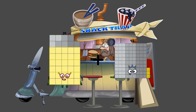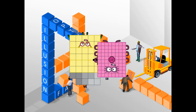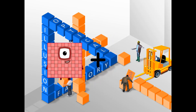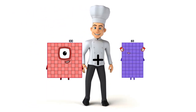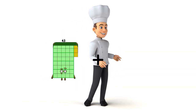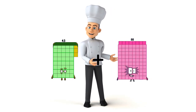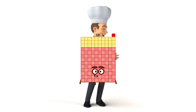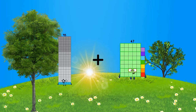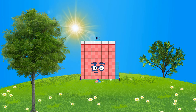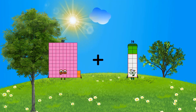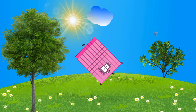39 plus 80 equals 119. 100 plus 60 equals 160. 43 plus 88 equals 131. 95 plus 20 equals 115. 82 plus 6 equals 88.